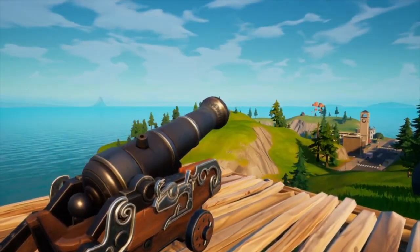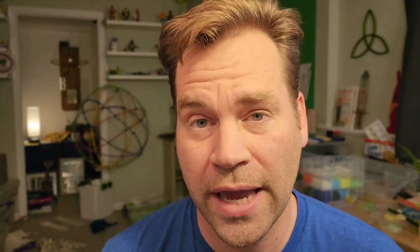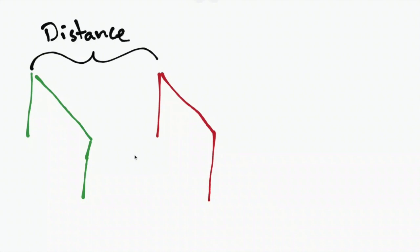There are all these other vehicles that don't have speedometers, so we have no idea how fast those are going. I decided to design an experiment to precisely measure the speed of a whole bunch of the different Fortnite vehicles. In a science classroom, the way you would measure the speed of something is probably with a photo gate — a device with two gates where an object passing the first gate starts a timer, and passing the second gate stops it.